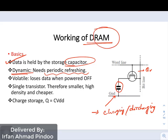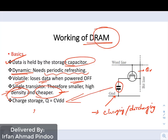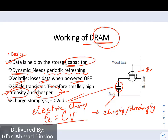DRAM is also volatile, meaning you will lose the data once you power off your circuit. Since it contains only one transistor, its density is very high and it is cheaper in cost. Data is stored in the capacitor in the form of electric charge, given by the relation Q = CV.